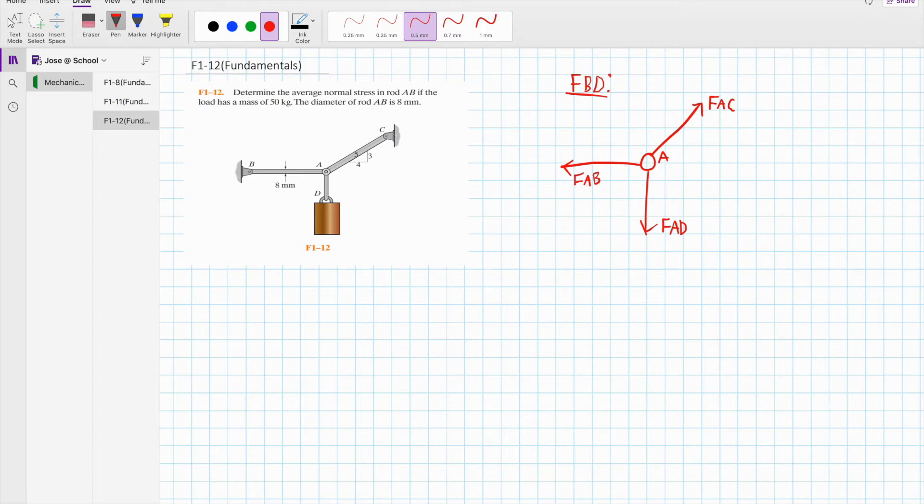We see force FAC has a slope that is given by 4 in the x direction, 3 in the y, and 5 as the hypotenuse.